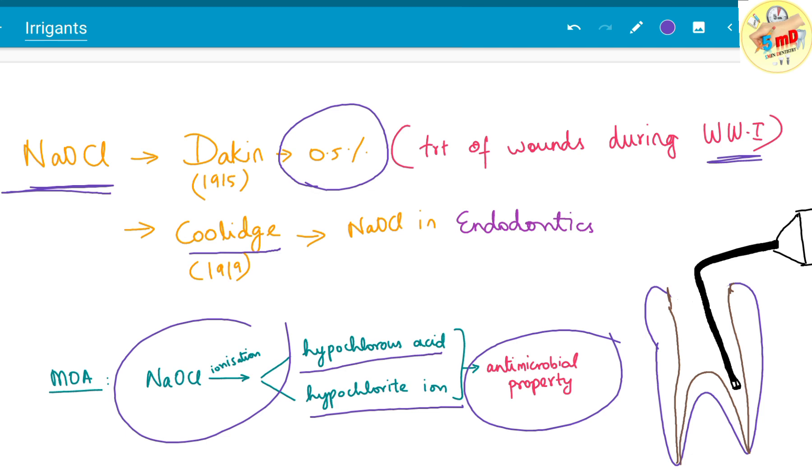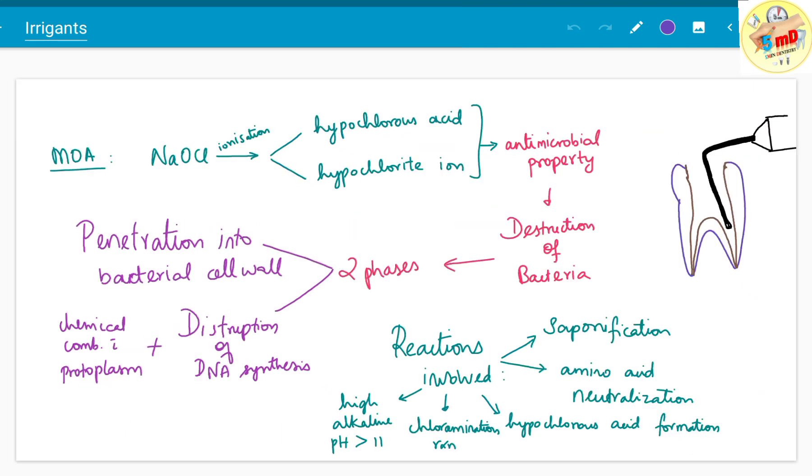The mechanism of action is dependent on the ionization process, after which sodium hypochlorite turns into hypochlorous acid and hypochlorite ion. The antimicrobial property works by two phases: first is penetration into the bacterial cell wall, followed by disruption of DNA synthesis in combination with protoplasm.